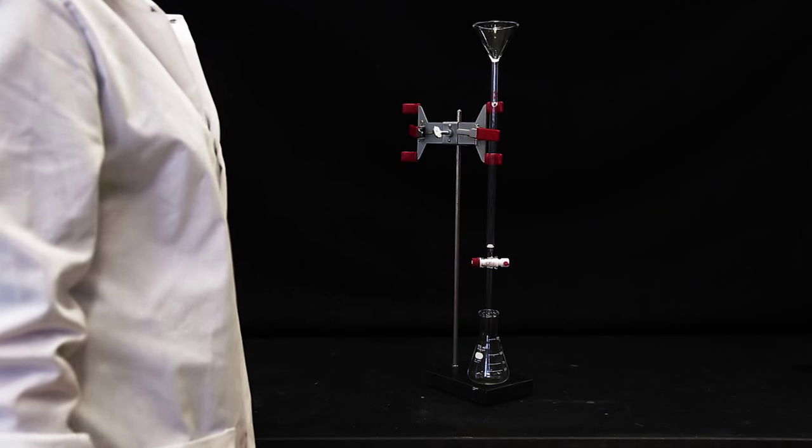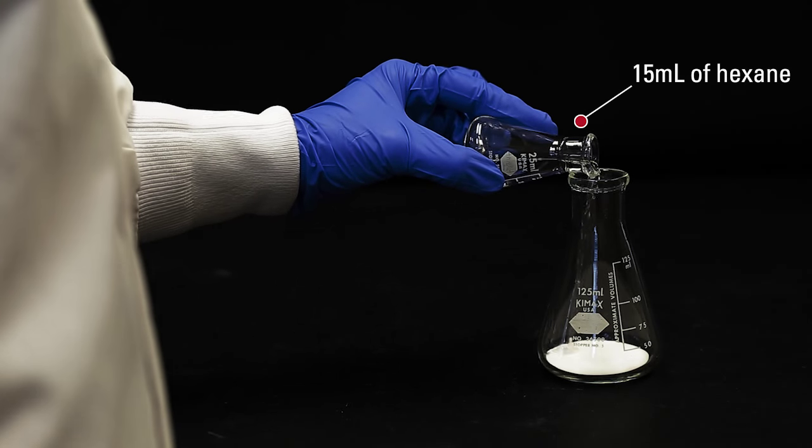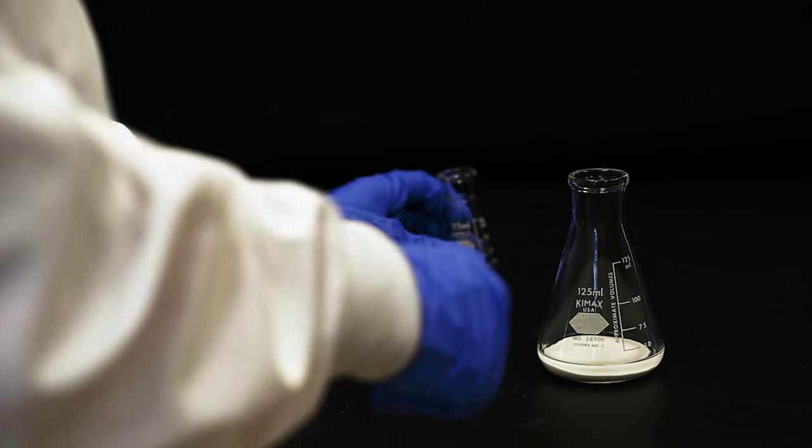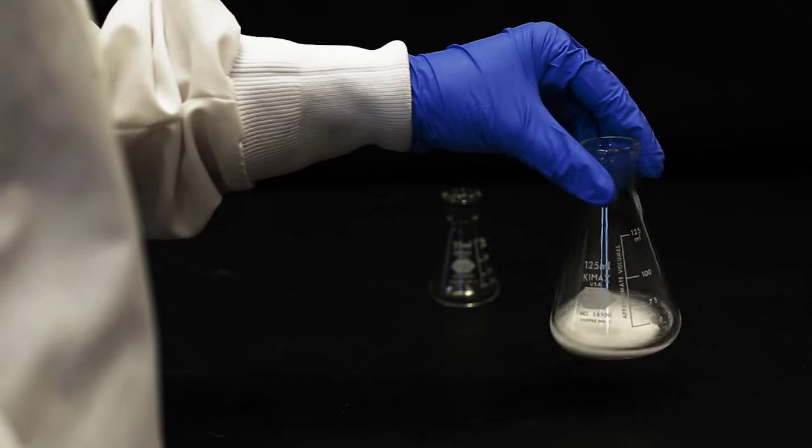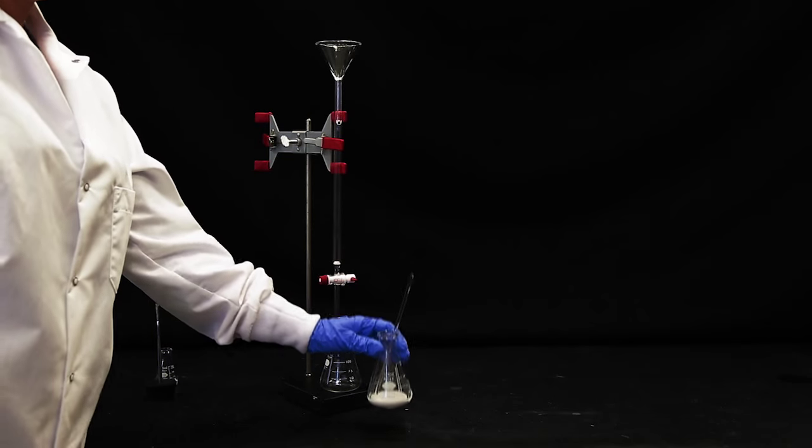Place an Erlenmeyer flask beneath the column. Prepare the alumina slurry by slowly adding 15 milliliters of hexane to 8 grams of alumina powder while swirling the mixture. Use a glass rod to mix the slurry.